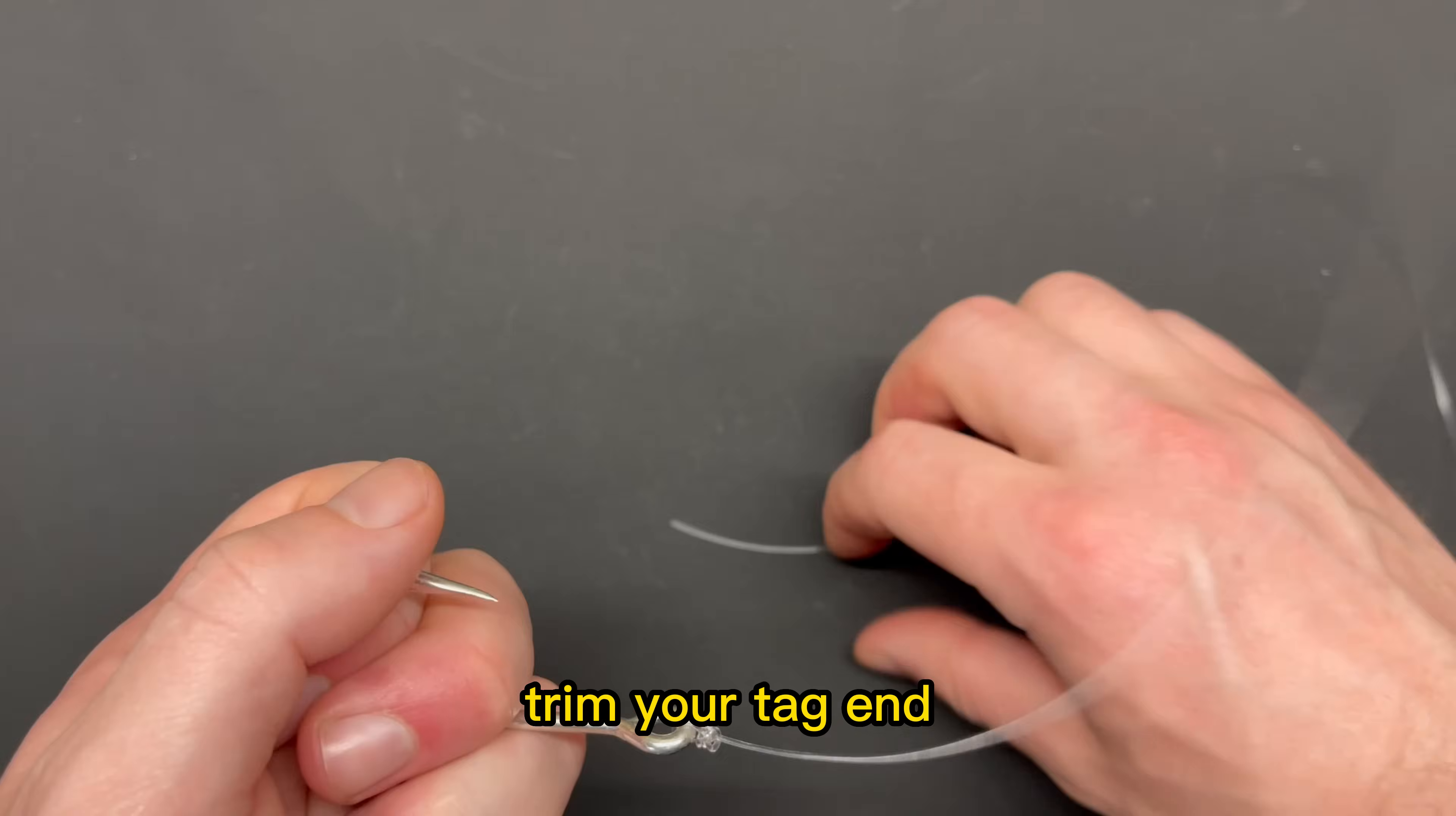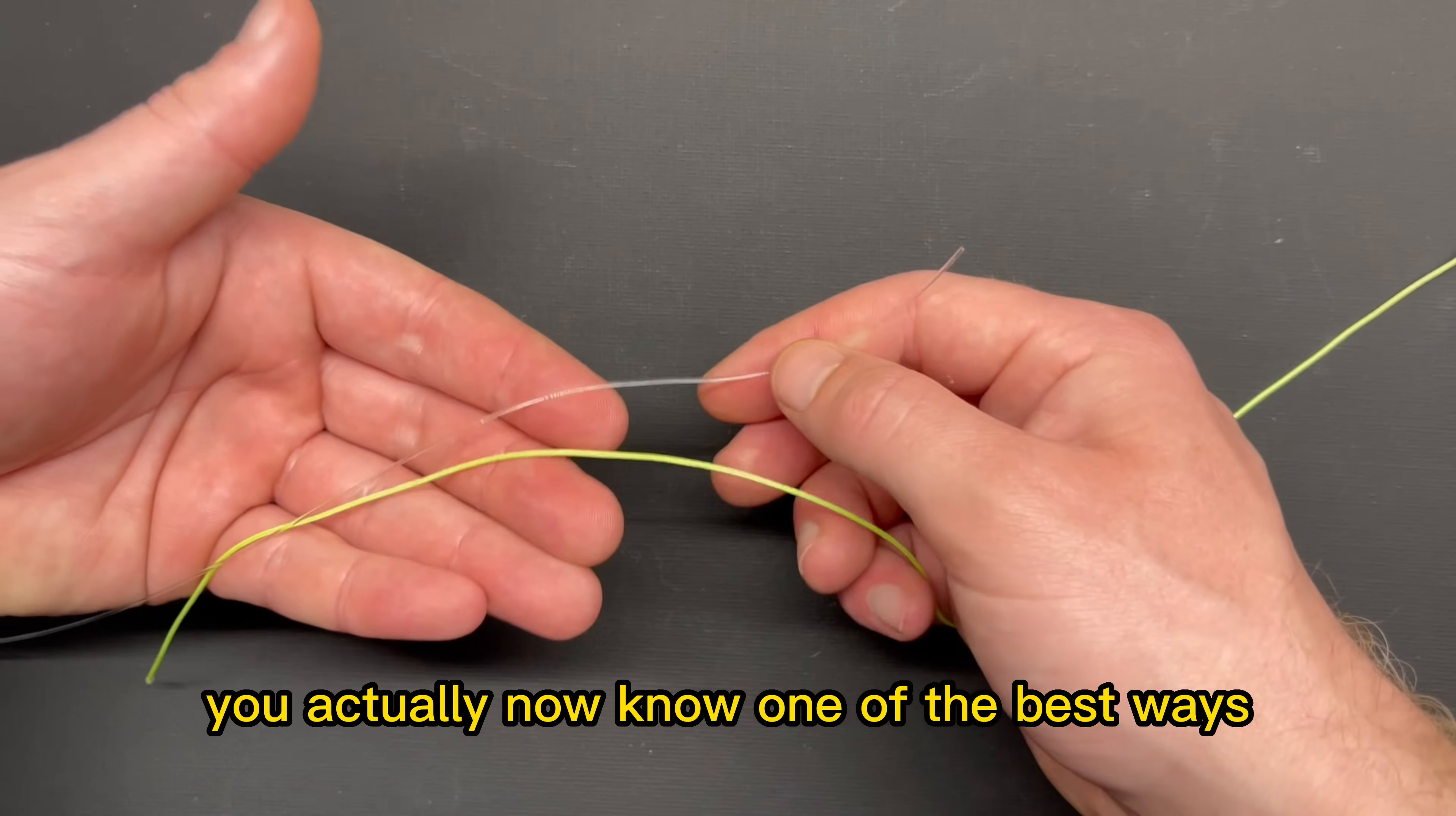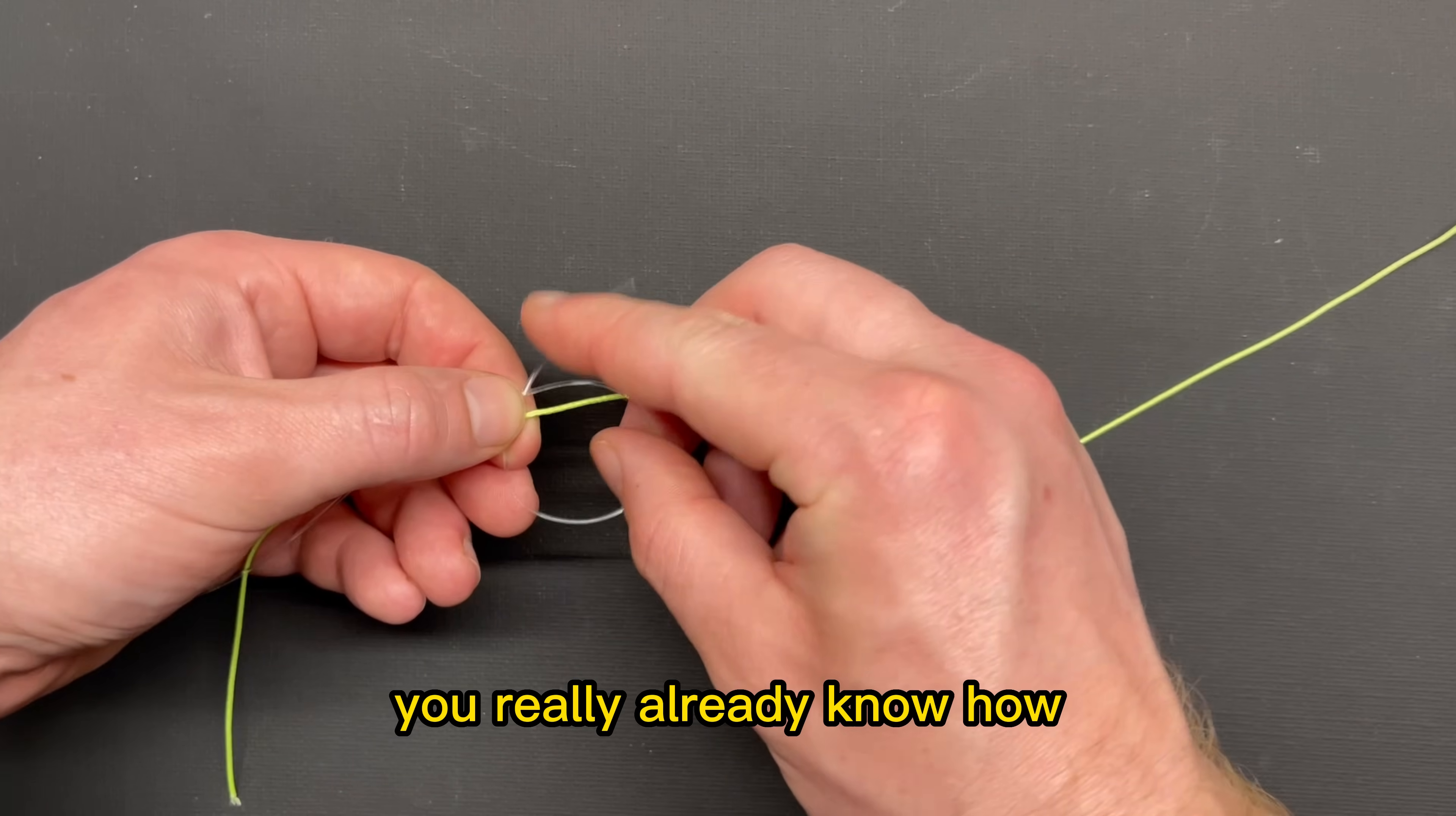Trim your tag end. One unique reason this knot is so useful aside from its strength and simplicity is that by learning it, you actually now know one of the best ways to tie two pieces of line together. So if you need a way to tie a leader line onto your main line, by learning the uni knot, you really already know how.